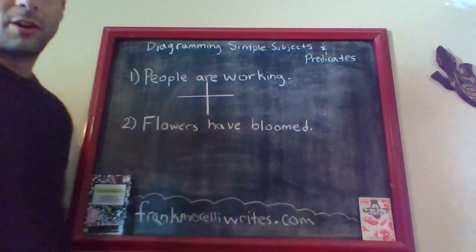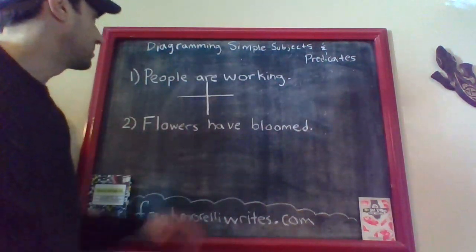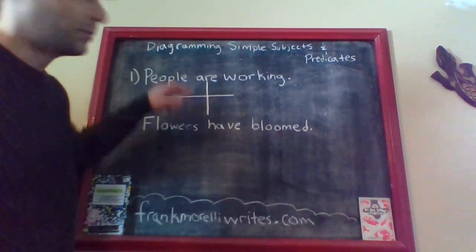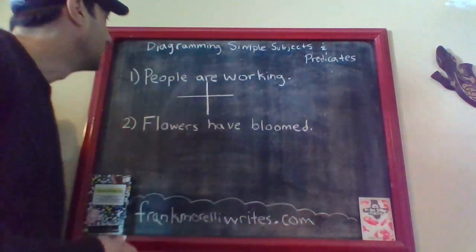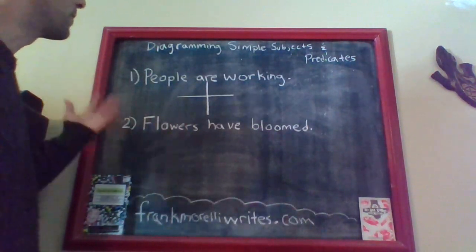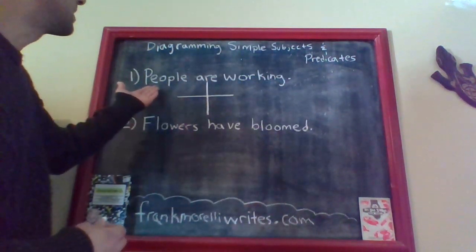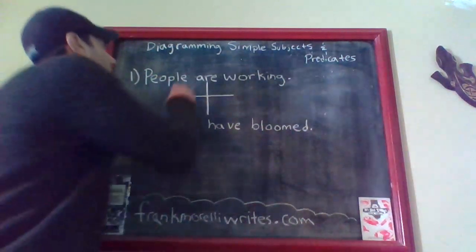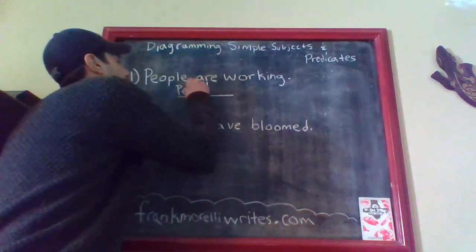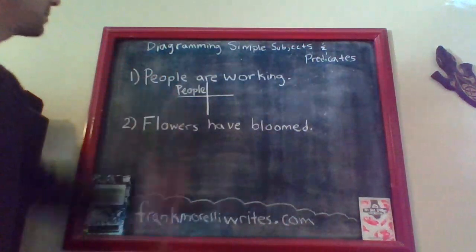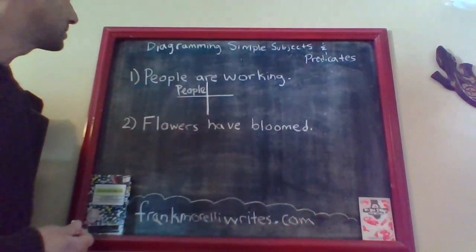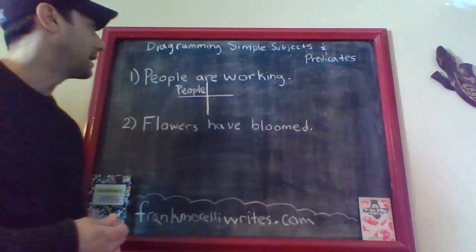Each one of these spots is meant for certain things in certain parts of the sentence. In the first part of the diagram is where you're going to put the simple subject. If you look at the sentence 'people are working,' you want to find the noun or pronoun about whom or what the sentence is actually about. In this case, the sentence is about people. 'People' is the noun and it is the simple subject, so you write the word 'People' in this spot — notice I use a capital P because it's the first word in the sentence, and you always capitalize that.